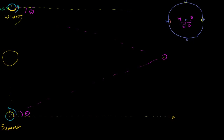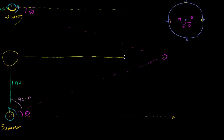That's all review from the last video — I just reoriented how we visualize it. What I want to do in this video, given that we can measure theta, is figure out how far this star actually is. If we know theta, then we know this angle right over here is a right angle, and we're going to know that this angle is 90 minus theta. We also know the distance from the sun to the earth — approximately one astronomical unit. So we know an angle, we know the side adjacent to the angle, and we want to find the side opposite — the distance from the sun to the star. This is a right triangle.